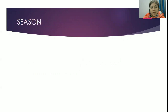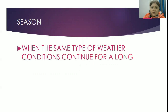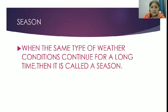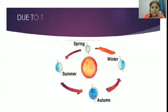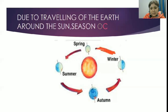Now we will understand what is a season. When the same type of weather condition continues for a long time, then it is called a season. Seasons occur due to the traveling of the earth around the sun.